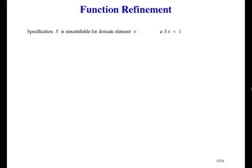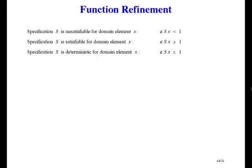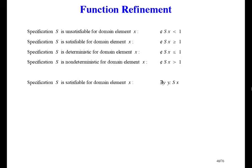Here are the relevant definitions for functional programming. A specification S is unsatisfiable for domain element x means that S applied to x produces the empty bunch of results. It's satisfiable if it produces at least one result. It's deterministic if it doesn't produce more than one result, and non-deterministic if it produces more than one result. Satisfiable means: there exists y such that y is in S of x. Implementable means: for all x there exists y such that y is in S of x, or for all x, S of x is not null.